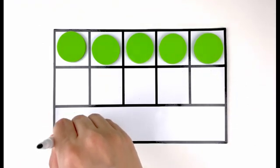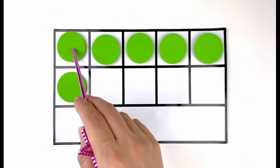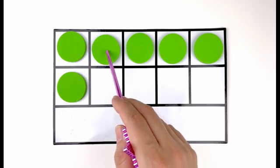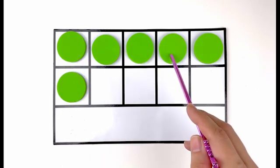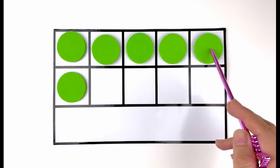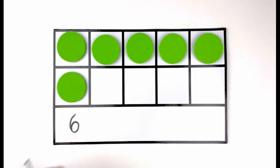Let's add another one. How many green circles do you see now? Let's count them. One, two, three, four, five, six. Six green circles. Number six.